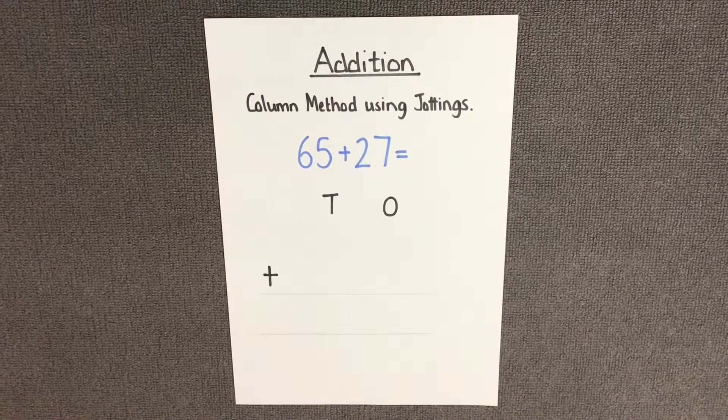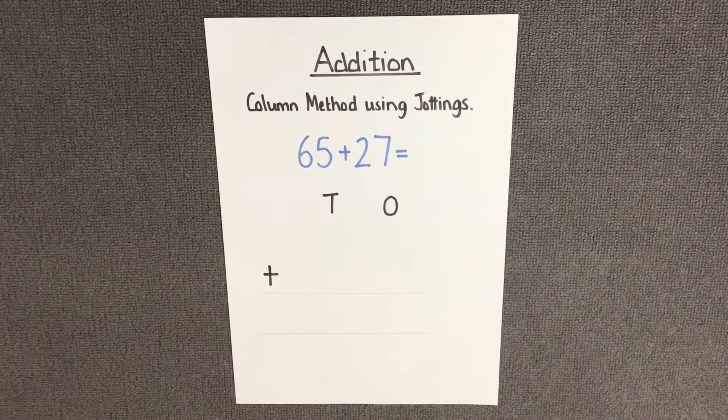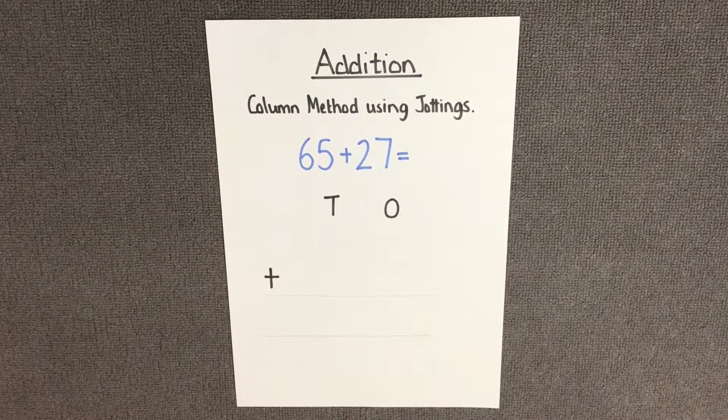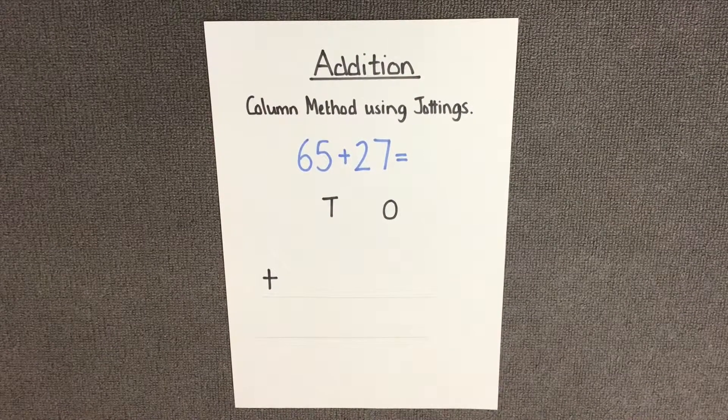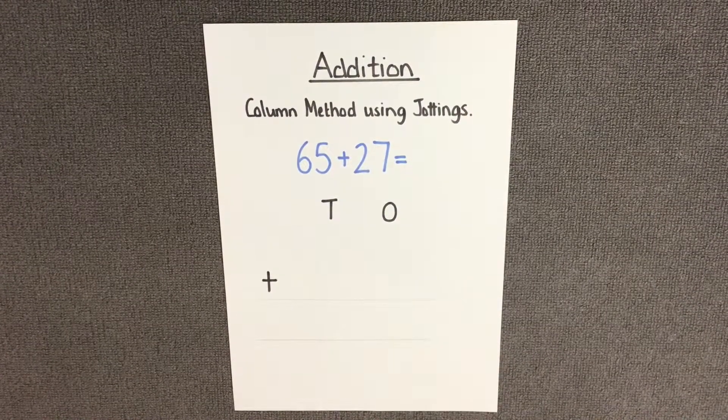The first thing we need to do is identify the larger number, which in this question is 65. Next, we need to show each number using our jottings diagram, remembering that one line equals 10 and one dot equals 1.